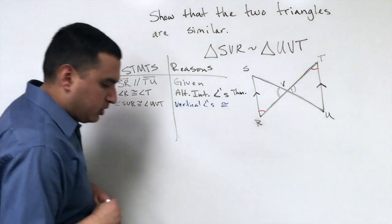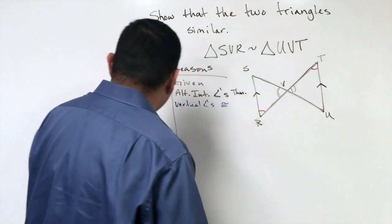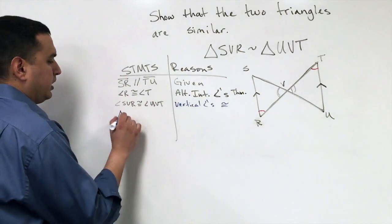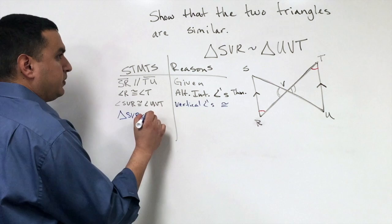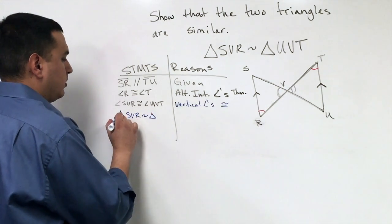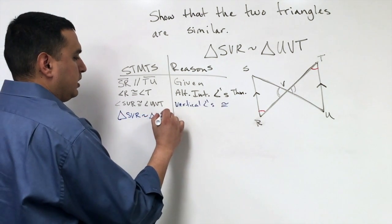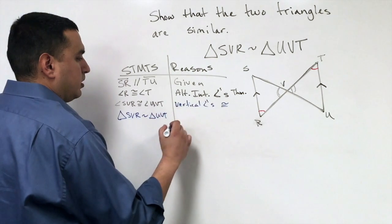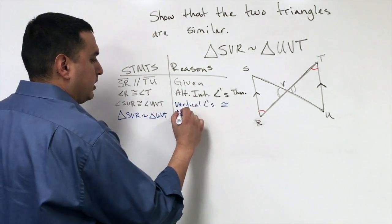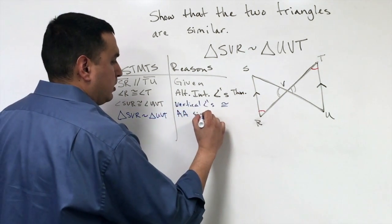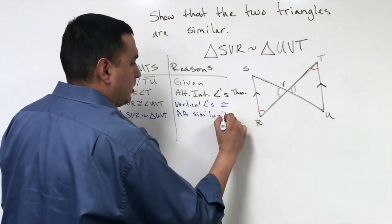Which gives us our two angle pairs. So then I would say triangle SVR is in fact similar to triangle UVT by our angle angle similarity theorem.